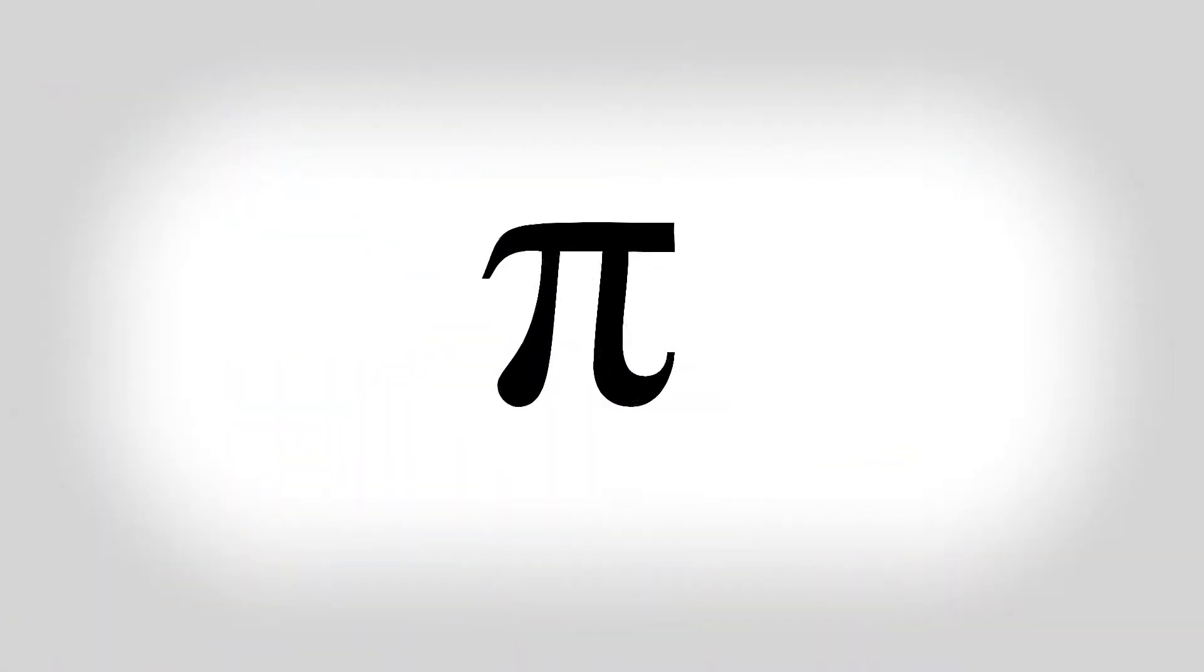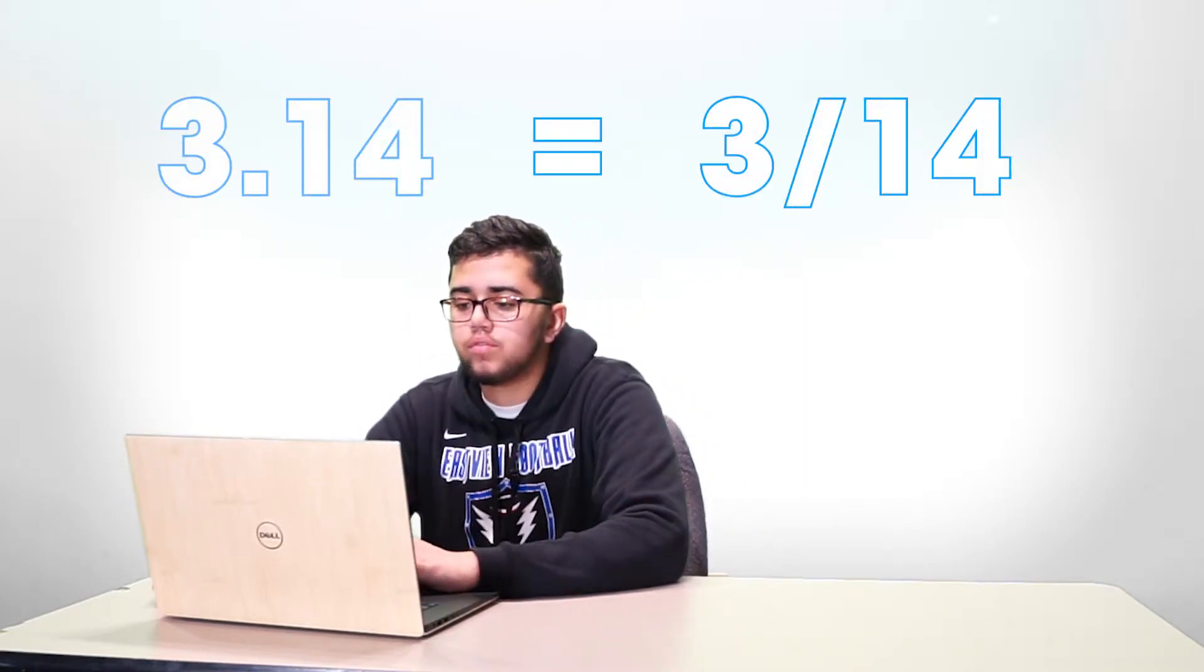Today is what experts refer to as pie day, deriving from the constant used in mathematics to illustrate the ratio from the circle circumference to its diameter. Since the only important digits of pie are 3.14, the day takes place on 314, or the 14th day of the third month of the year.